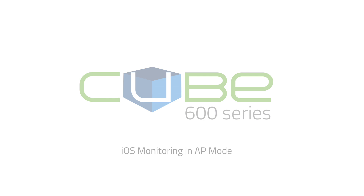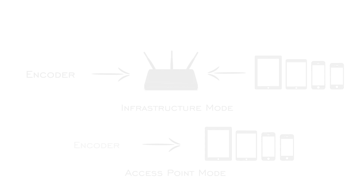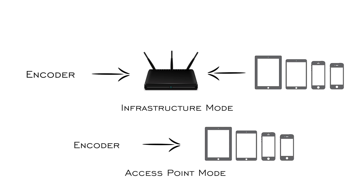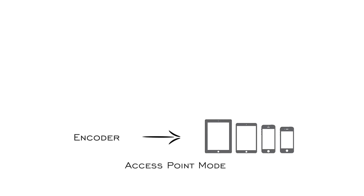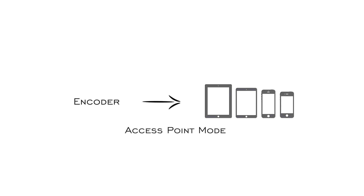In access point mode, we're going to connect directly to our Cube, while in infrastructure mode, we're using the router as a bridge to extend our range. I'll show you how to use both modes, but we're going to start with access point mode.